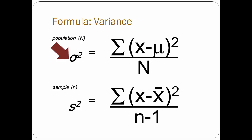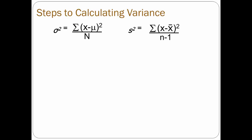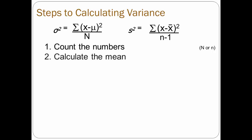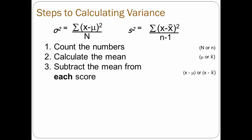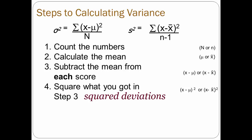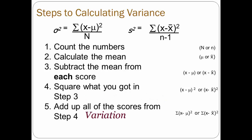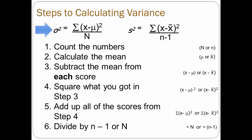The formula never changes. The only thing that changes is the data we put into it. And unless you have a reason otherwise, round your results to the hundredths, or the second decimal place. There are six steps to calculating variance: first, count the numbers, or the number of observations, in the data set; then calculate the mean; then for each score, subtract the mean from it to get the deviation; then square that for the squared deviation — note that by squaring, you will always have a positive number; add up all the scores from step 4 to get variation; and finally, divide by the number of scores if calculating for a population, or by the number of scores minus 1 if calculating for a sample.